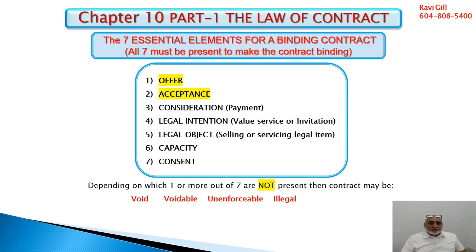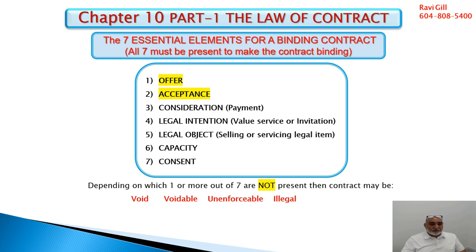If one of the seven elements is not present, then the contract could be void, voidable, unenforceable, or illegal. Let's have a look at what void, voidable, unenforceable, and illegal mean.